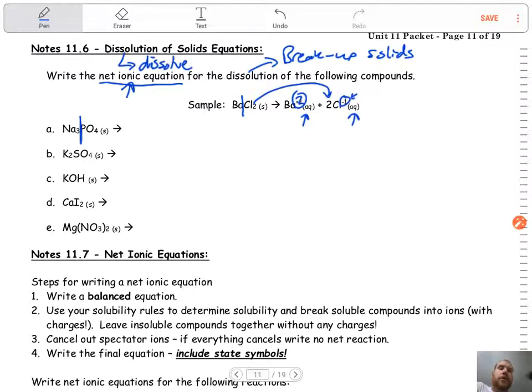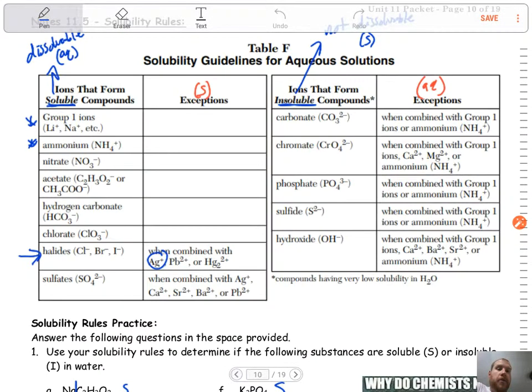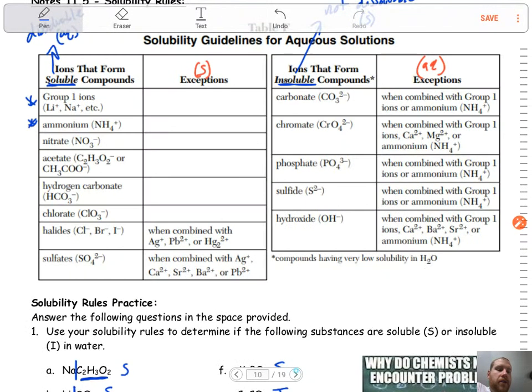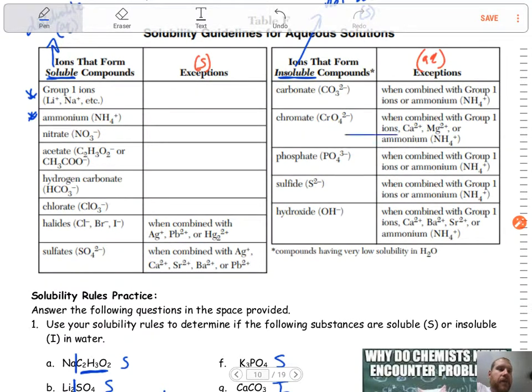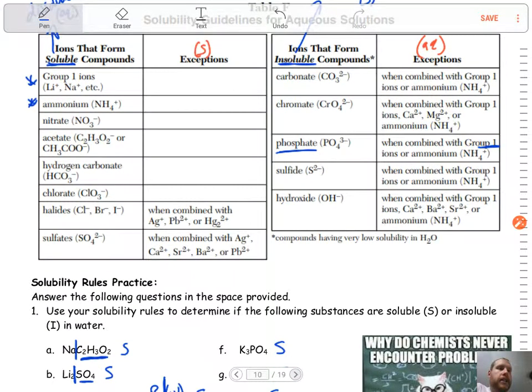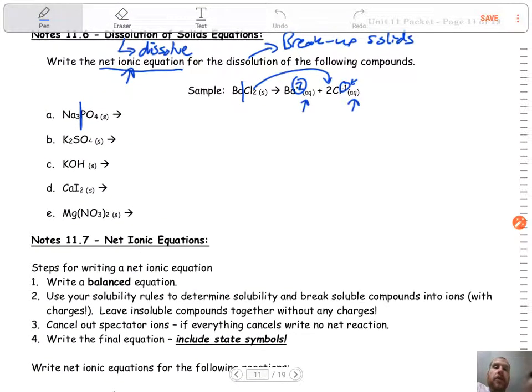What we're going to do here, all we're going to do is split it up like we were doing in the previous one. When it tells you to show or write the dissolution equation, it's telling you it's going to split up. So you don't need to go back. If we were to go back and look at our solubility rules, just for good practice, if we were to look, phosphate was our anion. So I'm going to look for phosphate PO4. It's insoluble, except if it's combined with a group one, and sodium is a group one, which means it's an exception, so it's going to be aqueous.